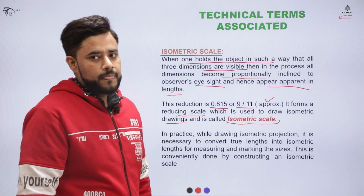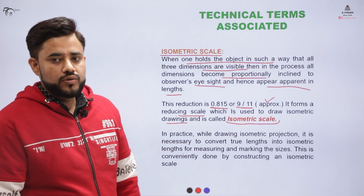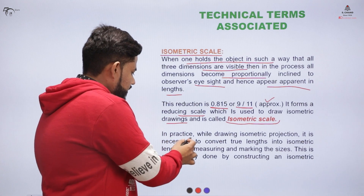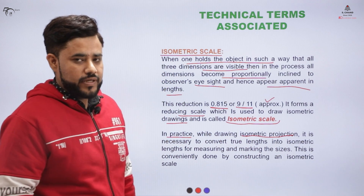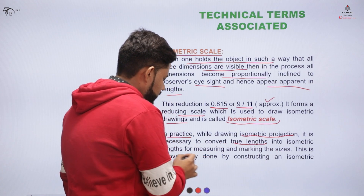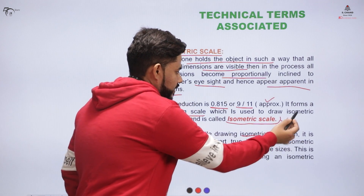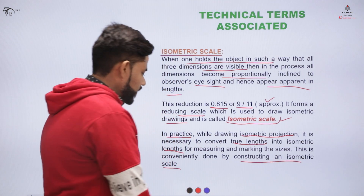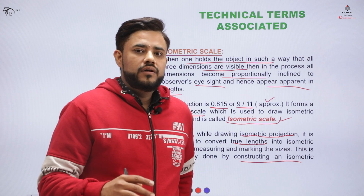In isometric drawings we use these reduced lengths, and generally we reduce the length by constructing isometric scales. Isometric scales are constructed in order to prepare the isometric projections of drawings. Whenever we want to produce isometric projections, we convert the true length into the isometric length by forming these isometric scales.